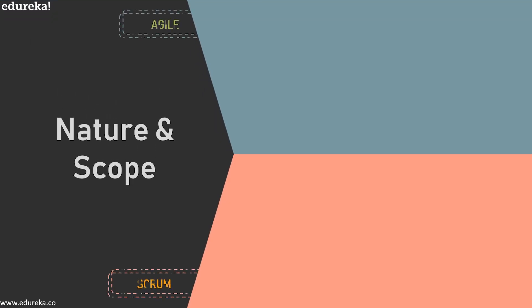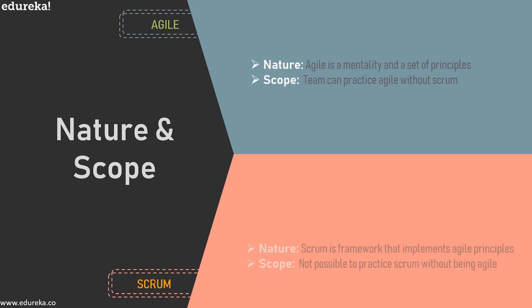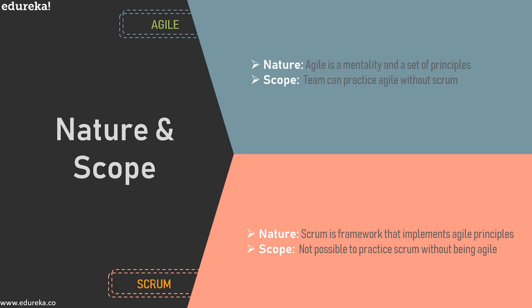The first difference is nature and scope. Agile is a mentality and set of principles, whereas Scrum is an action plan to implement those guidelines or principles. Teams can practice Agile and not Scrum, but it is impossible to practice Scrum without being Agile. You can definitely follow the values and principles of Agile without doing Scrum. Scrum is simply one way of doing Agile software development — there are plenty of others like Extreme Programming, Crystal, and XScale — and Scrum is one of the most popular frameworks among them. Thus Scrum is part of Agile, but Agile is just not Scrum.